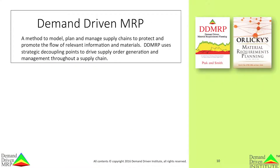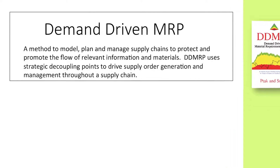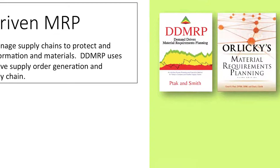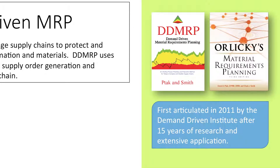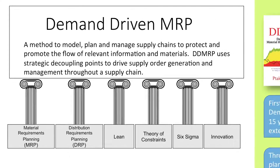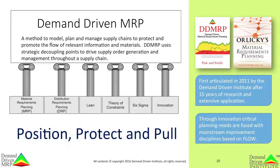This brings us to demand-driven material requirements planning, or DDMRP for short. DDMRP is a method to model, plan, and manage supply chains to protect and promote the flow of relevant information and materials. DDMRP uses strategic decoupling points to drive supply order generation and management through a supply chain. It was first introduced to the world in the third edition of Orlicky's Material Requirements Planning after 15 years of research and application. Through innovation, it fuses key planning requirements with today's prominent flow-based improvement methodologies, and can best be summarized as position, protect, and pull.